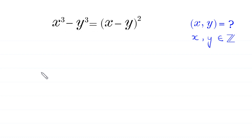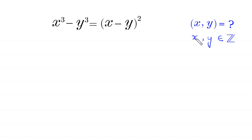Hello everyone, you are welcome to how to solve this very nice algebra equation. x cubed minus y cubed is equal to x minus y whole squared. Our job is to find all possible values of x and y such that x and y are integers.